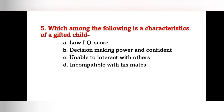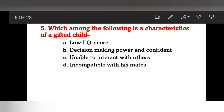Which among the following is a characteristic of a gifted child? Options: low IQ score, decision making power and confident, unable to interact with others, or incompatible with his mates? The right answer is B — decision making power and confident.